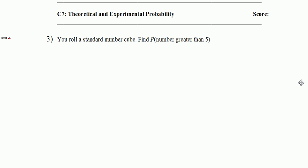Question seven, or actually concept seven, theoretical and experimental probability. Number three, we roll a standard number cube, and we know that when they say standard number cube, they're really talking about what we would call a dice. We're going to find the probability of getting a number greater than five. The only number on a dice that's greater than five is a six. So there's one way to get what we're trying to get here, a number greater than five, and there's six things that could happen. So our probability is just 1/6.